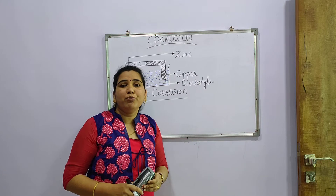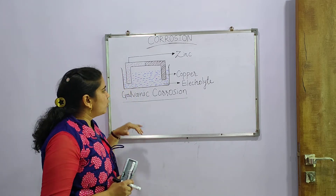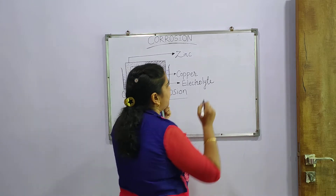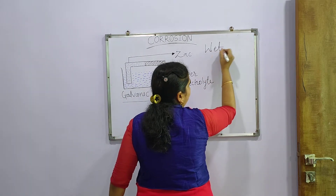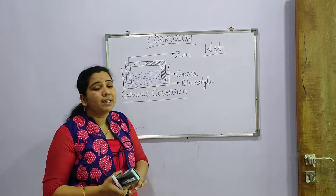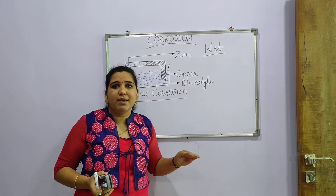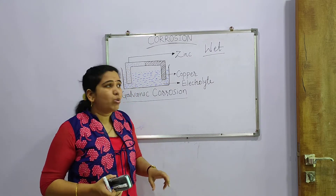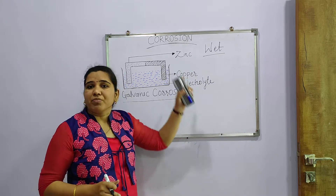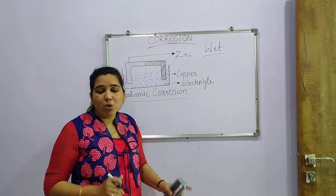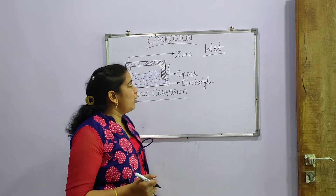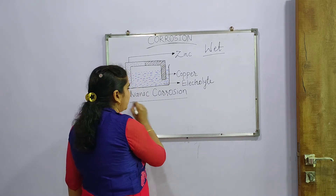I have given a number of videos on this particular topic. Today's topic is types of wet corrosion. We have seen in the last lecture that wet corrosion is also called electrochemical corrosion, and electrochemical corrosion can be of two types: one is galvanic corrosion, and another is concentration cell corrosion. So first we will see galvanic corrosion.